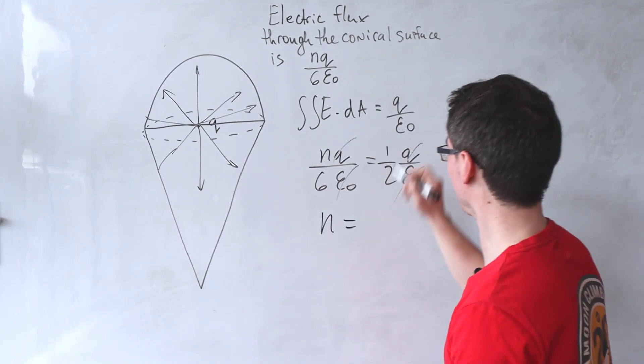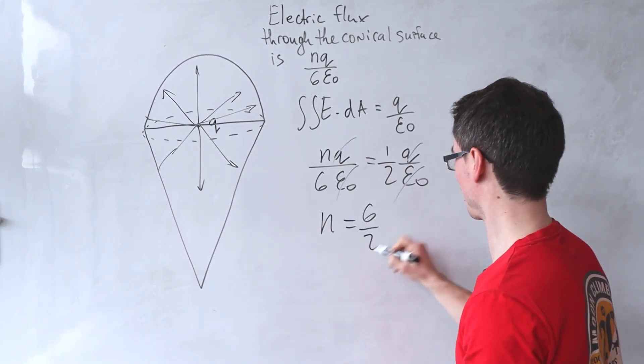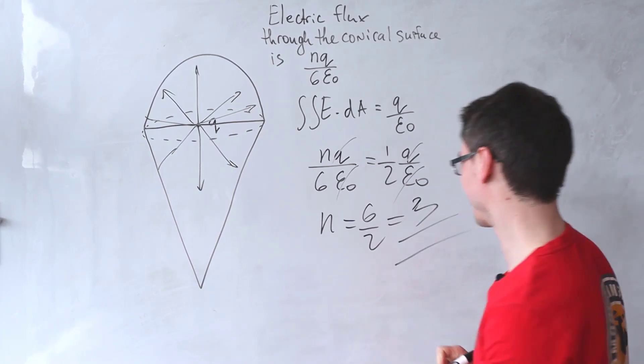That is, N is equal to 6 over 2, which is just equal to 3.